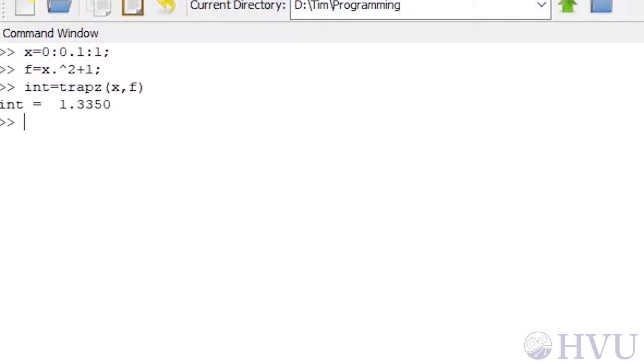My solution is 1.335. This is the same as the solution I got previously with my own integration function, as I would expect. Now I'm going to reduce my step size to 0.05, or one half of what I used before. Repeating the integration, I get 1.3338, which is slightly closer to the exact solution.